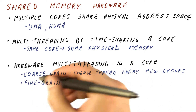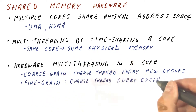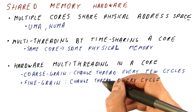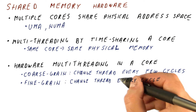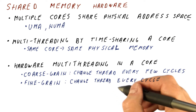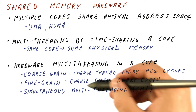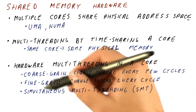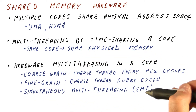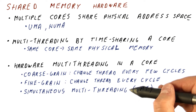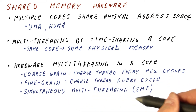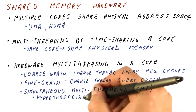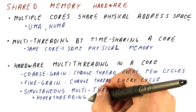We can also have fine-grain hardware multi-threading, where every cycle we are working on another thread. This needs even more hardware support, because we need to switch between threads very quickly. We can also have simultaneous multi-threading, or SMT, where in any given cycle we could be doing instructions from different threads — also called hyper-threading by some processor manufacturers.